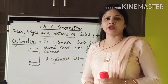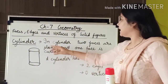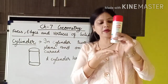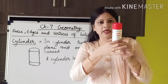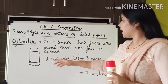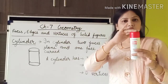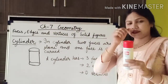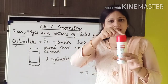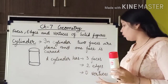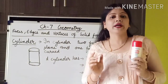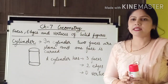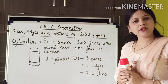The last solid shape is cylinder. In a cylinder, two faces are plain and one face is curved. The top and bottom face is plain, while the middle area is a curved face. A cylinder has three faces, two edges, and zero vertices. You can see there is no corner in a cylinder — this cylinder shape has zero vertices. Just pause this and write these things in your maths copy.